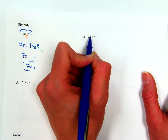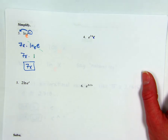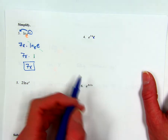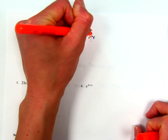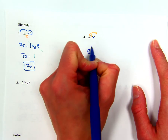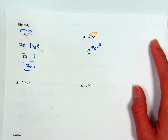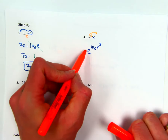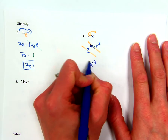Here we have E to the 3 times natural log of X. Fill in the base E as a reminder. First, the 3 moves to become an exponent, giving us E to the log base E of X cubed. Then, this is one of our shortcut rules: E to the log base E — those cancel out, and the only thing left is X cubed.